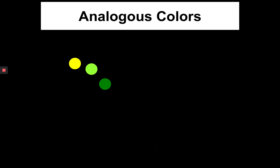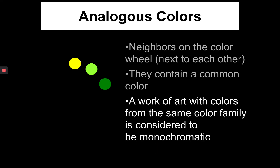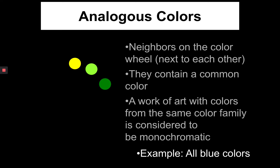Analogous colors appear next to each other on the color wheel, and they often contain a common color. A work of art that uses all of the same colors — we've already established this earlier in the semester — is called monochromatic. That would be a painting that is only all blue colors, lights and darks of blues, called tints and shades of the color blue. That is called monochromatic.